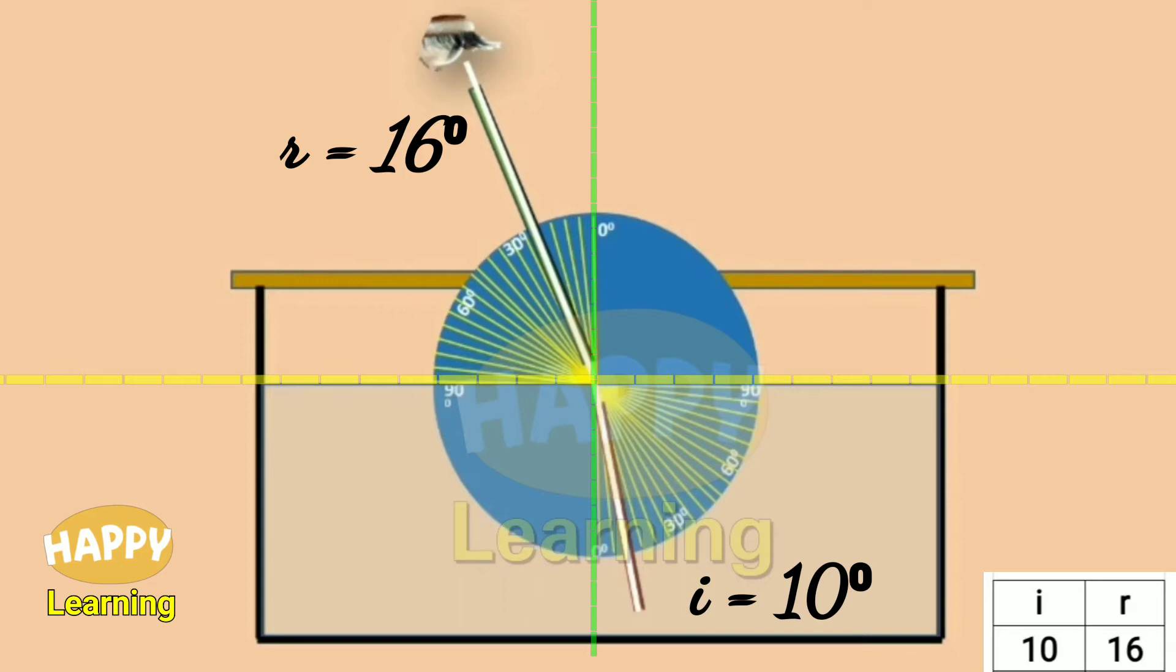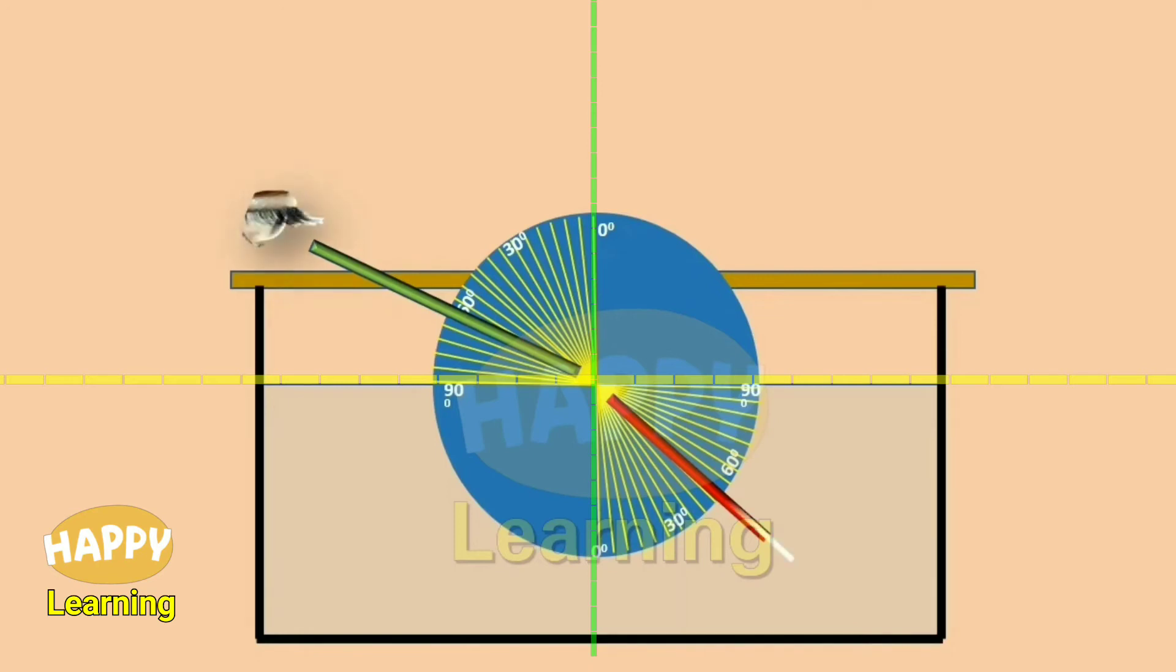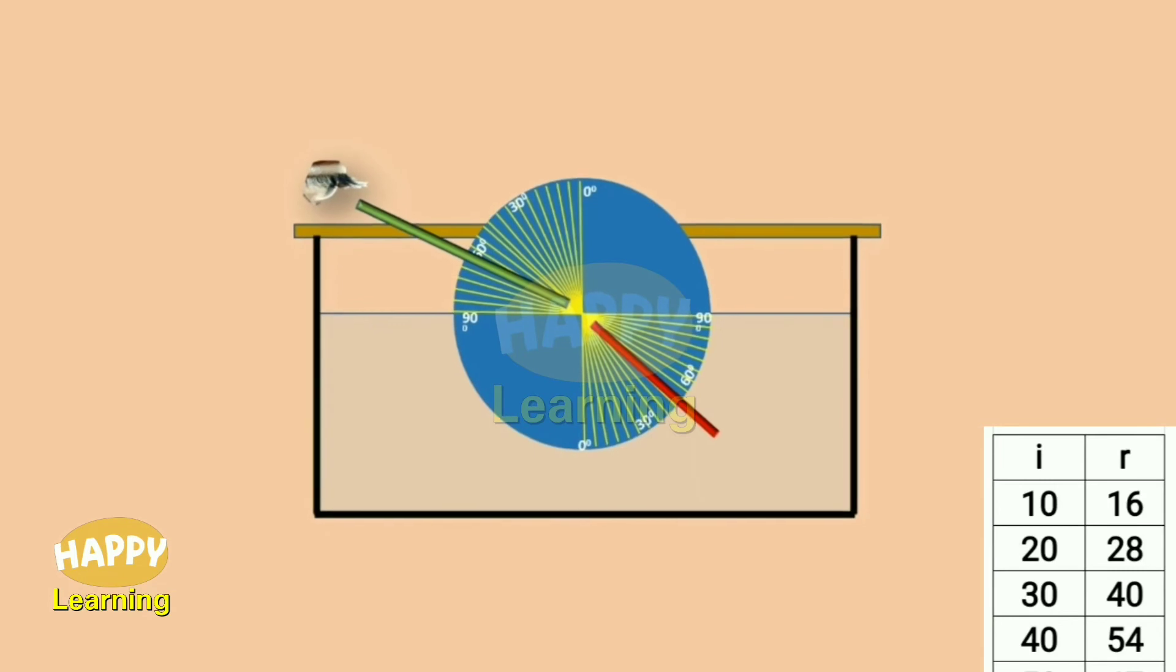Do the same for various angles. Select a different angle for the bottom straw, put it in water, then adjust the upper straw so that the two straws appear to be straight. Take the disc outside of water, measure the two angles and note down the values in the table. For three, four, five different angles of the bottom straw, the corresponding angles of the upper straw are noted in the table.